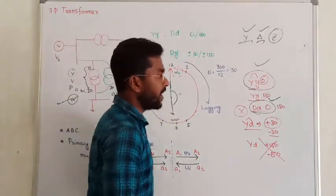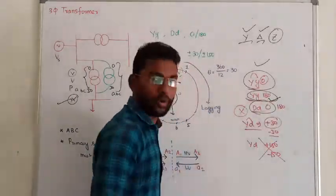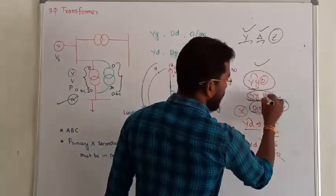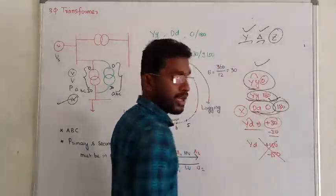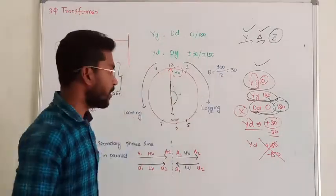So 180 degree corresponds to 6 o'clock on the clock diagram. Star-star is 180 degrees, and delta-delta is also 180 degrees. This combination is star-star and delta-delta.